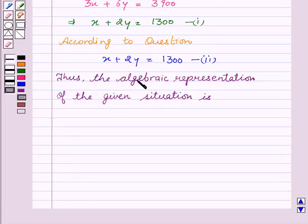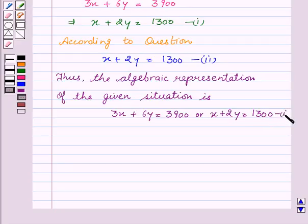Thus, the algebraic representation of the given situation is 3X plus 6Y equal to Rs. 3900, or it can be written as X plus 2Y equal to Rs. 1300. This is our first equation.